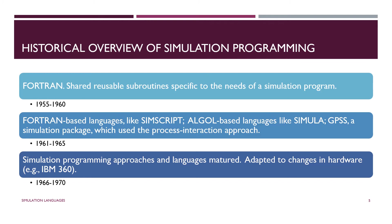Between 1966 and 1970, simulation programming approaches and languages matured. There was still a lot of development going on, but much of it had to do with adapting to changes in hardware rather than creating new innovative software — perhaps more efficiency, and certainly adapting to the IBM 360 large mainframe. The same thing happened a few years later when development companies adapted simulation programming to small computers, desktops, and mini computers.